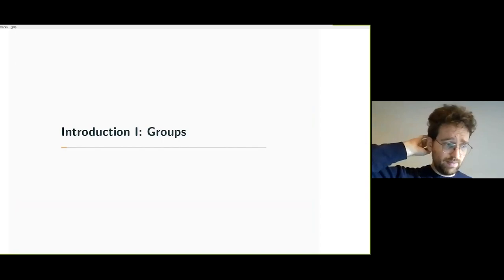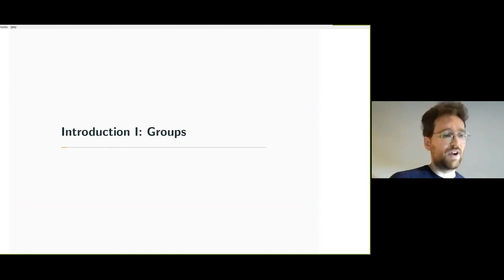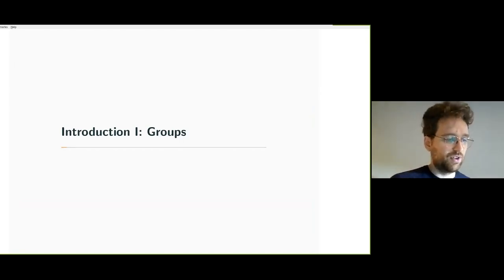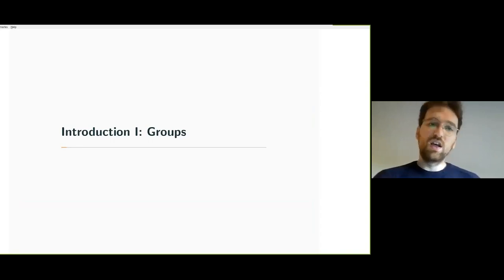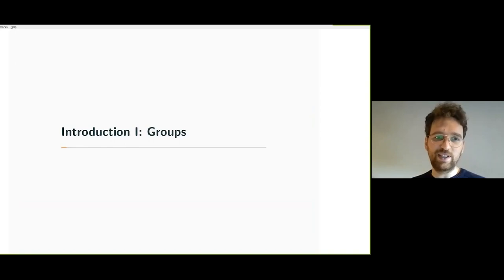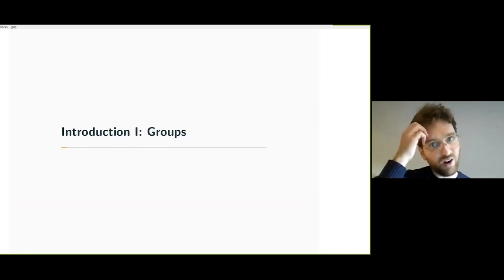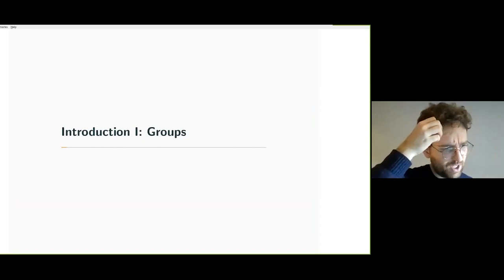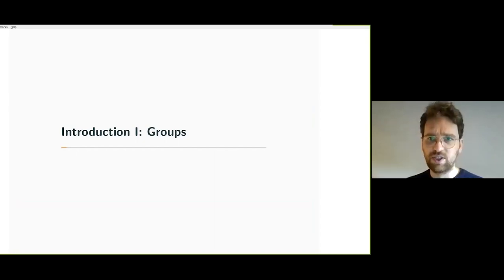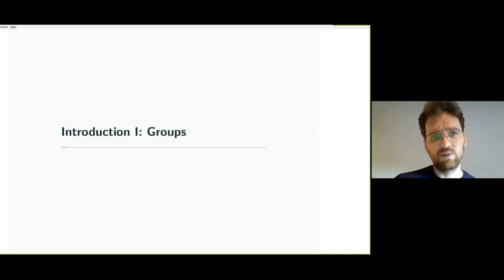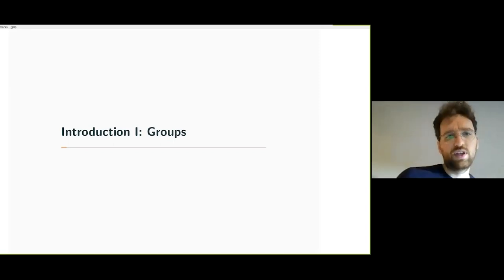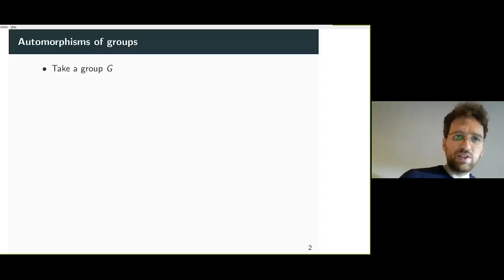I'm going to introduce this problem in a very pedagogical way. If you don't know anything about Out(F_n) or outer space, you should at least understand something about it, so I'll go slowly. If you don't understand something, please unmute yourself or put it in the chat. This talk is about groups, and especially about automorphisms of groups.